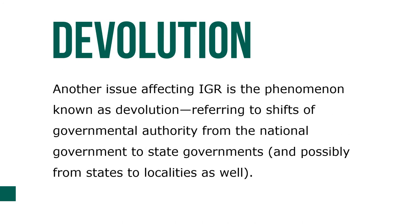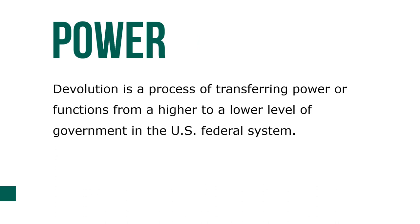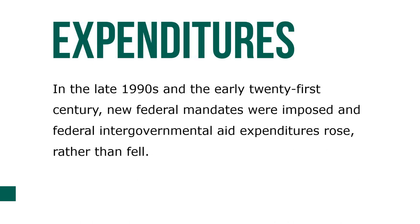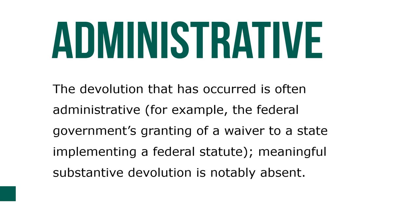Another issue affecting IGR is the phenomenon known as devolution — referring to shifts of governmental authority from the national government to state governments, and possibly from states to localities as well. Devolution is a process of transferring power or functions from a higher to a lower level of government in the U.S. federal system. There are a number of benefits, including more efficient provision of public services, increased competition and innovation in the public sector, greater responsiveness to citizen preferences, and more transparent accountability in policy making. However, in the late 1990s and early 21st century, federal mandates were imposed and federal intergovernmental aid expenditures rose rather than fell, and the devolution that occurred was often administrative.